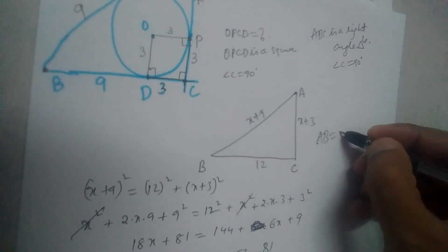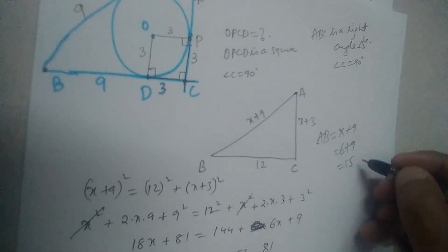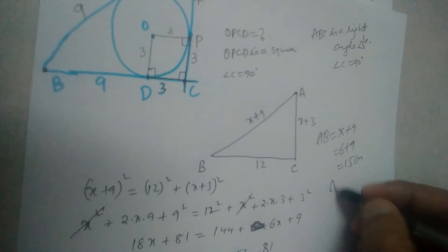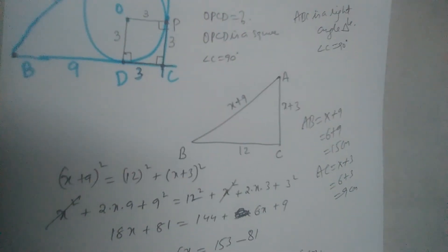AB is X plus 9, so it is 6 plus 9, which equals 15 centimeters. What is AC? AC is X plus 3, which is 6 plus 3, equals 9 centimeters.